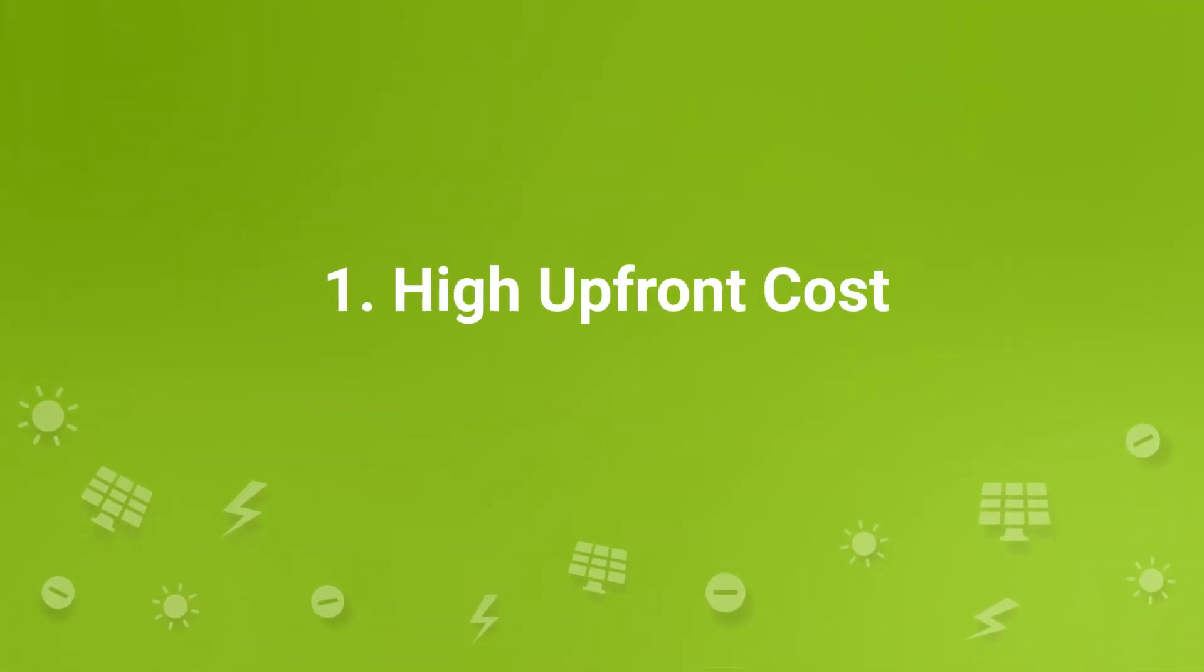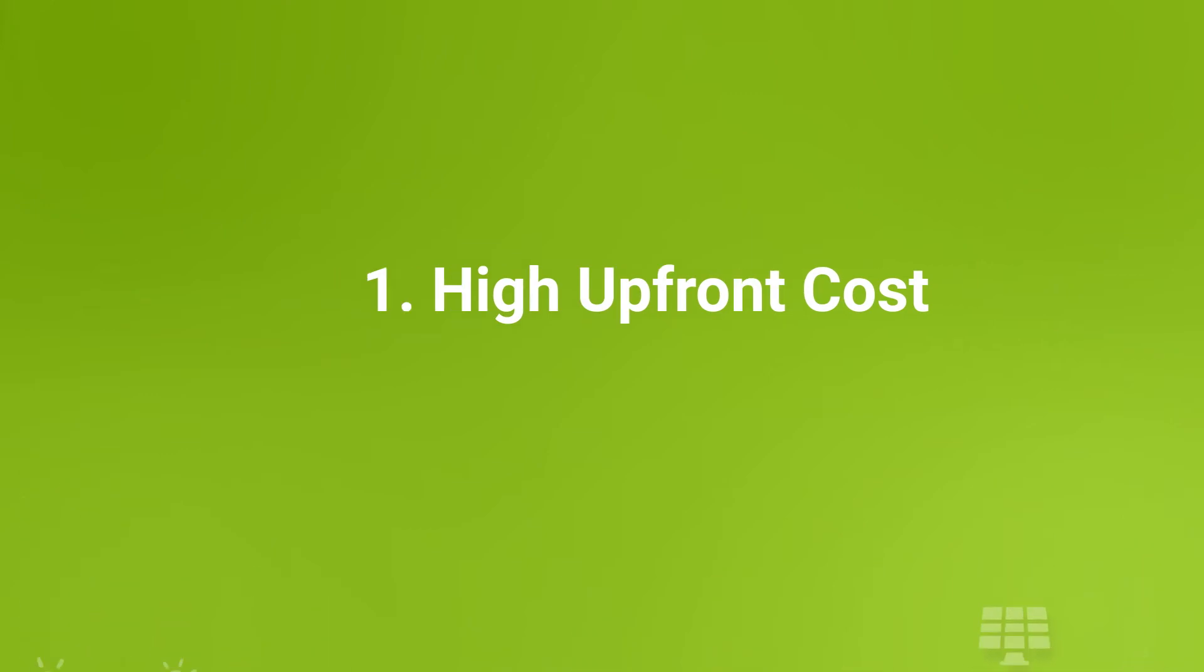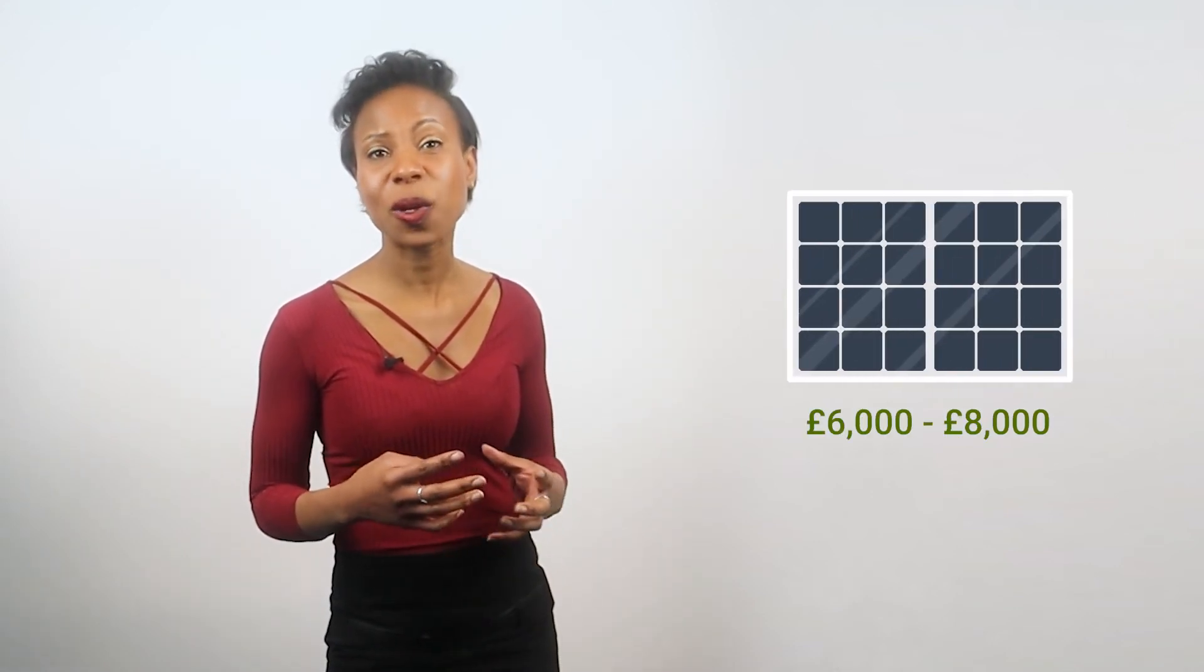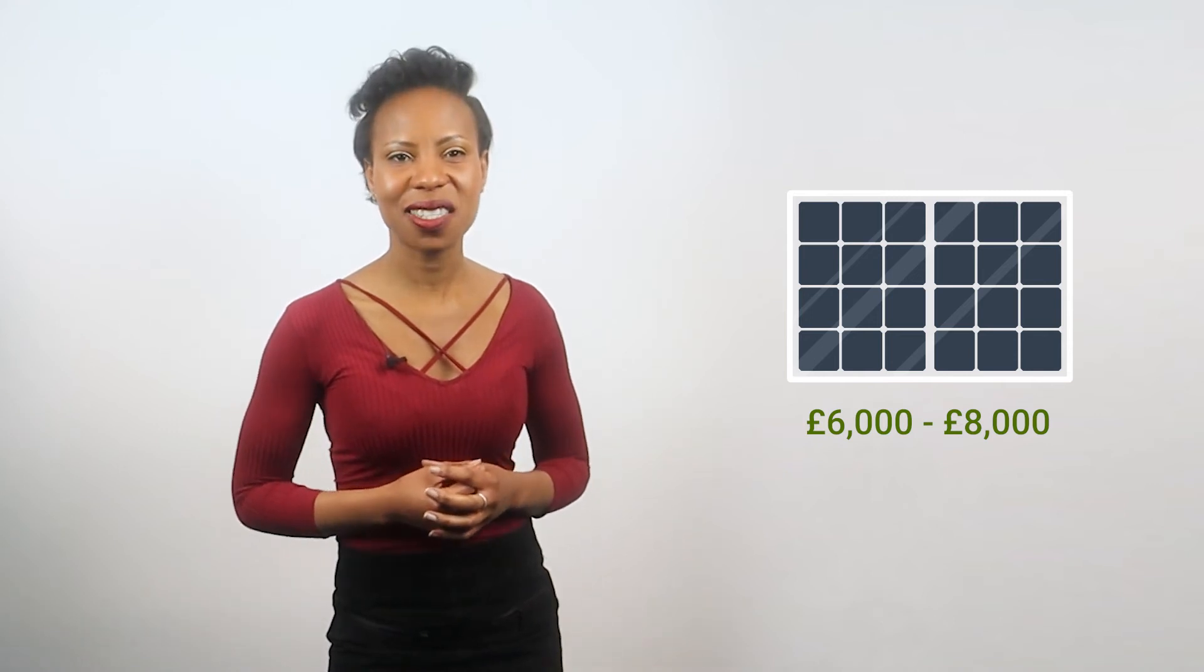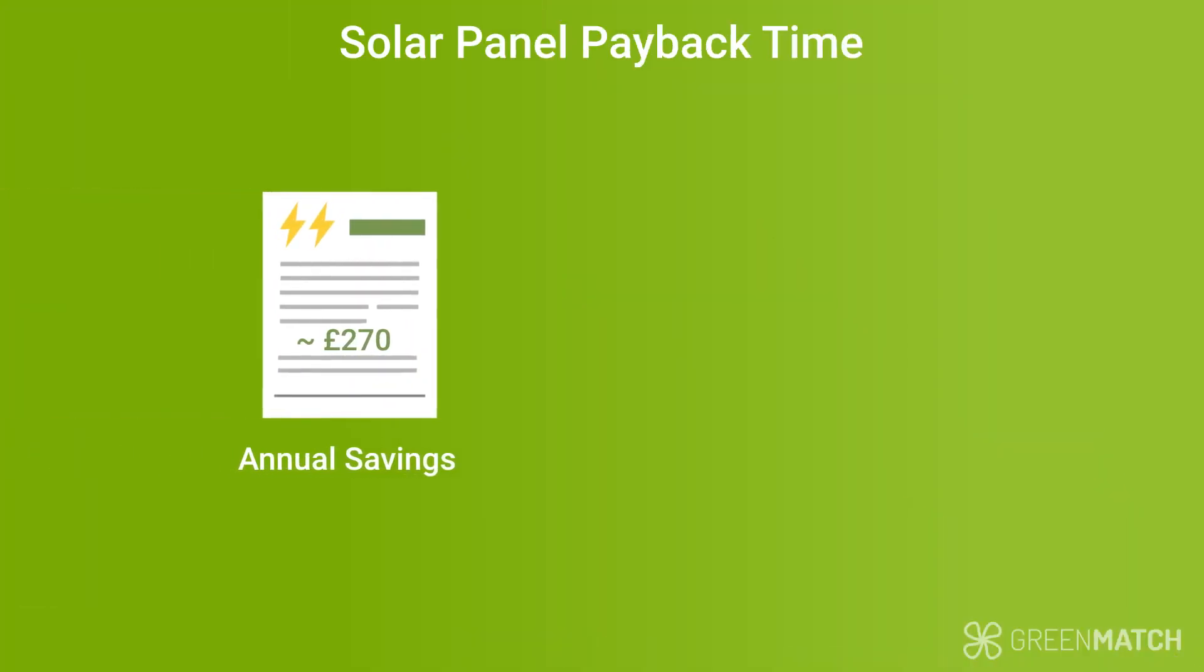High upfront costs. To begin with, the upfront costs of installing solar panels are quite high. You can expect on average to pay between £6,000 to £8,000 or even more for a 4kW system. Taking the annual savings on your bills into account, the payback time can be 16 to 25 years. For some, this can be too long of a wait and therefore not financially feasible.